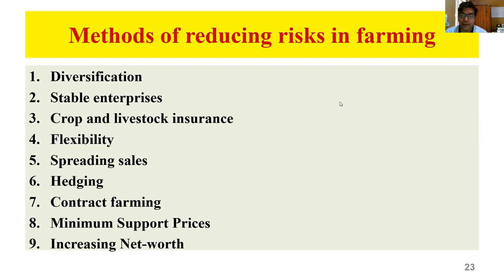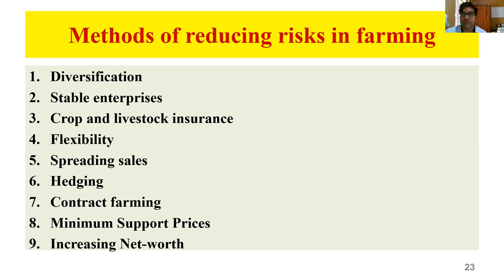Third, crop and livestock insurance: the farmer can minimize production risk, technical risk, or weather risk by taking crop and livestock insurance. Fourth, flexibility: the farm plan should be flexible — that is one of the characteristics of a good farm plan. If the farmer has limited enterprises and limited resources, the farm plan should be flexible so that resources from one enterprise can be transferred to another enterprise in need.